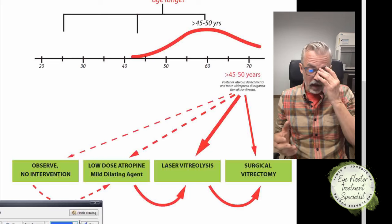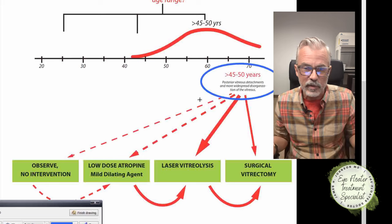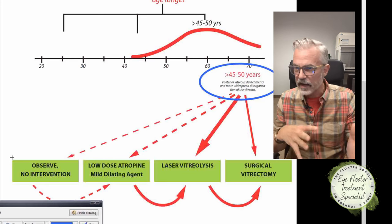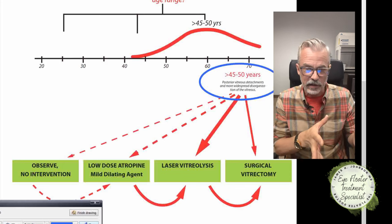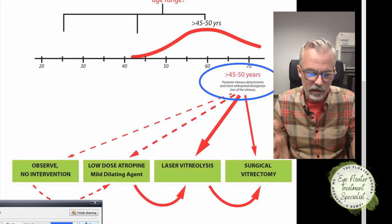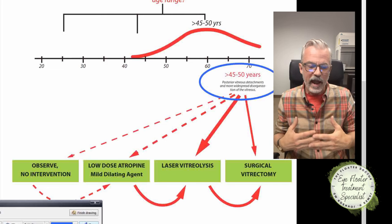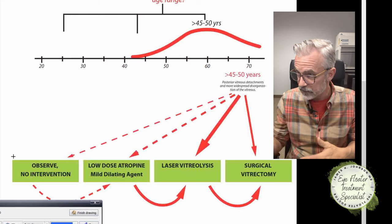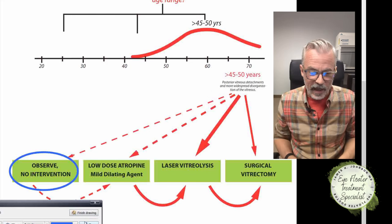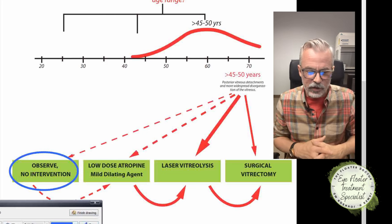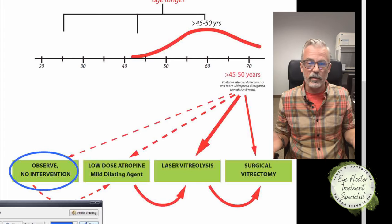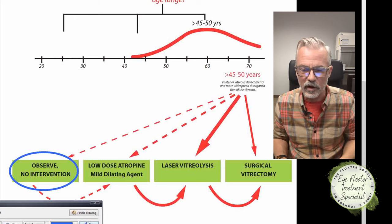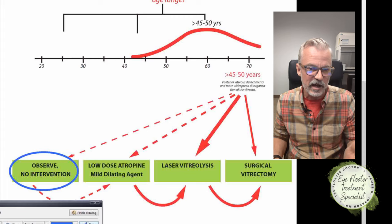For the older group, observation with no intervention is always an option — these endogenous floaters are not an eye-health condition like infection or cancer; we're truly trying to improve quality of vision and quality of life. By the time people come to me, they've already been observing without intervention for weeks to a decade or longer. Often they're following their doctor's recommendation to 'give it six months' — I don't know where six months comes from, but it's ubiquitous throughout the world. They wait their requisite time, then contact me.